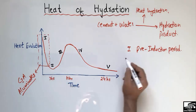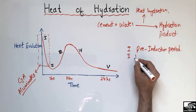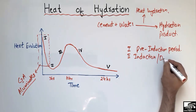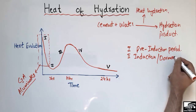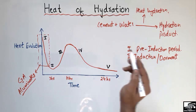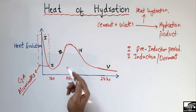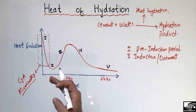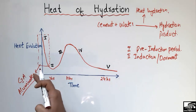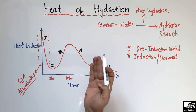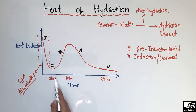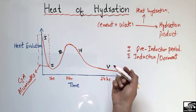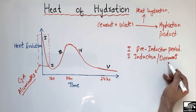The second period is called the induction period, also called the dormant period. In this period, before the hardening of the cement, this period occurs. During this period you can place your cement in the building, in a wall, in a slab, or in a beam of the structure — before this period ends. So this is the period before the hardening of the cement.